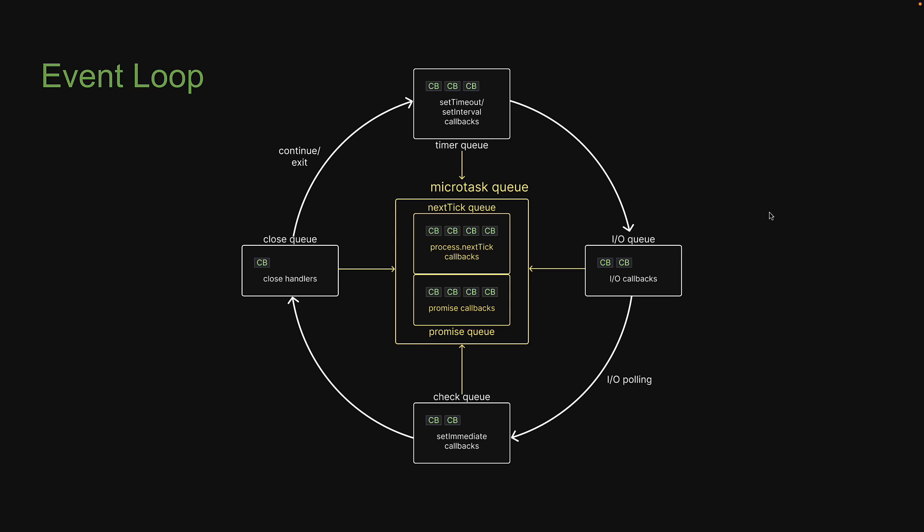In each loop, callback functions are dequeued when appropriate and executed on the call stack. If these points are clear, let us now understand better the order of execution of a few asynchronous methods in Node.js.